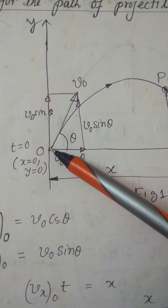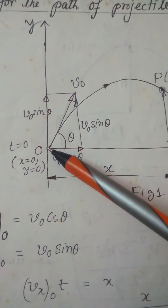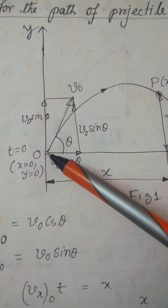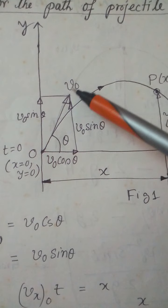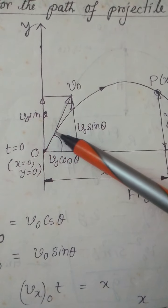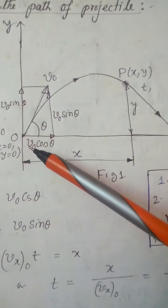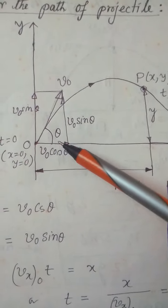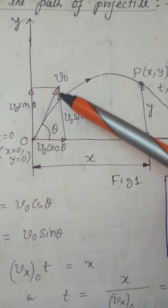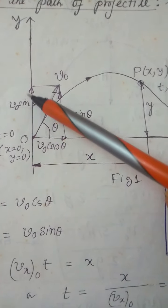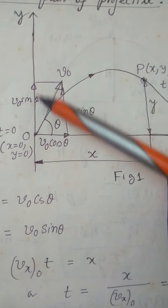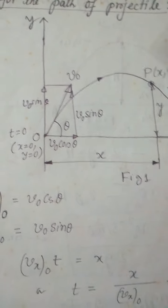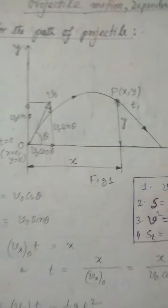At time t equal to zero, x is equal to zero and y is equal to zero. The projectile is thrown at velocity v0 at an angle theta with the x-axis. The horizontal component is v0 cos theta and the vertical component is v0 sin theta.